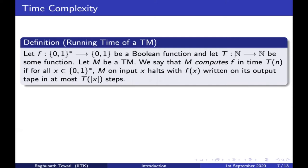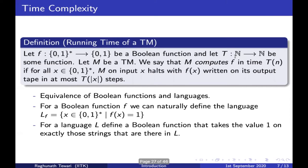In other words, M computes f in time t(n) if for each and every possible string, when M is given that string as input, it must output f(x) on its output tape and it can only take t(|x|) number of steps on that input — not any more. You might wonder why we look at a machine computing a function as opposed to a machine computing a language — the point is they are actually equivalent.